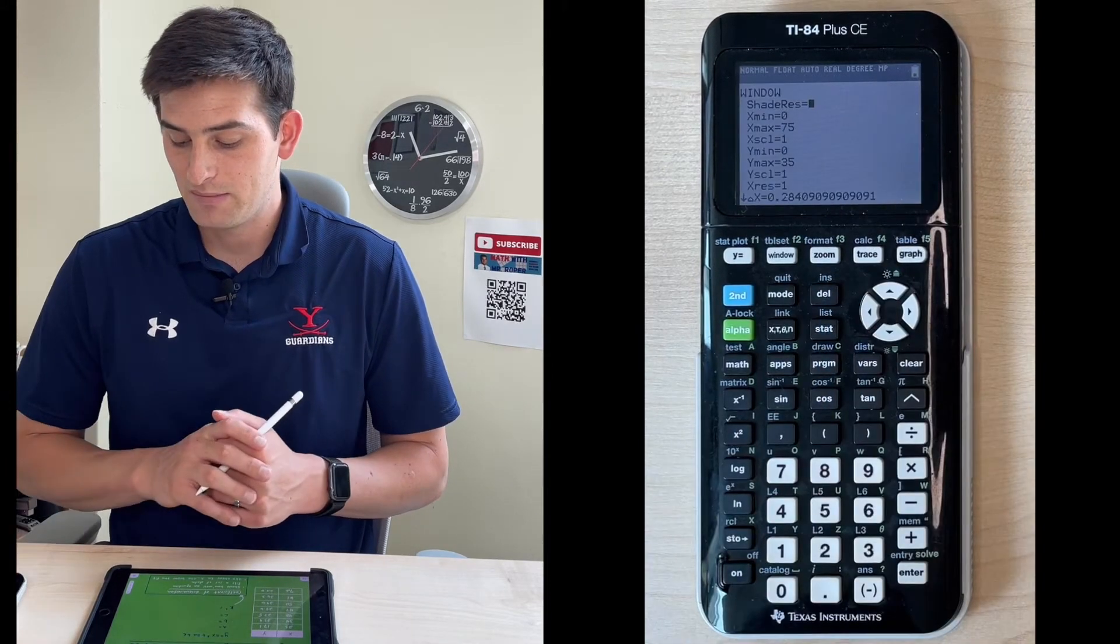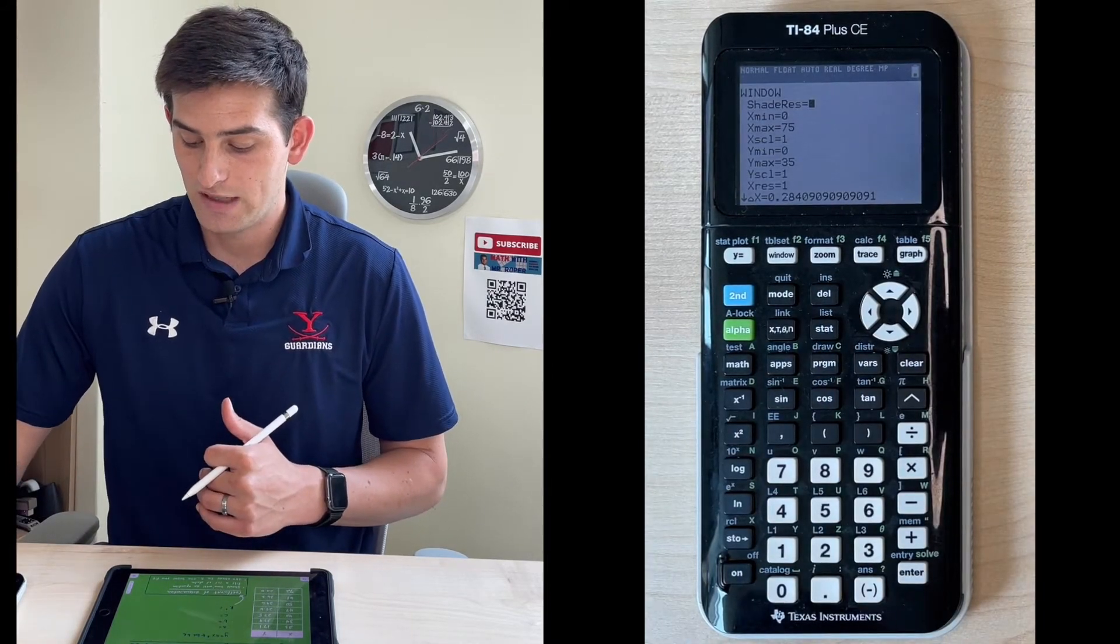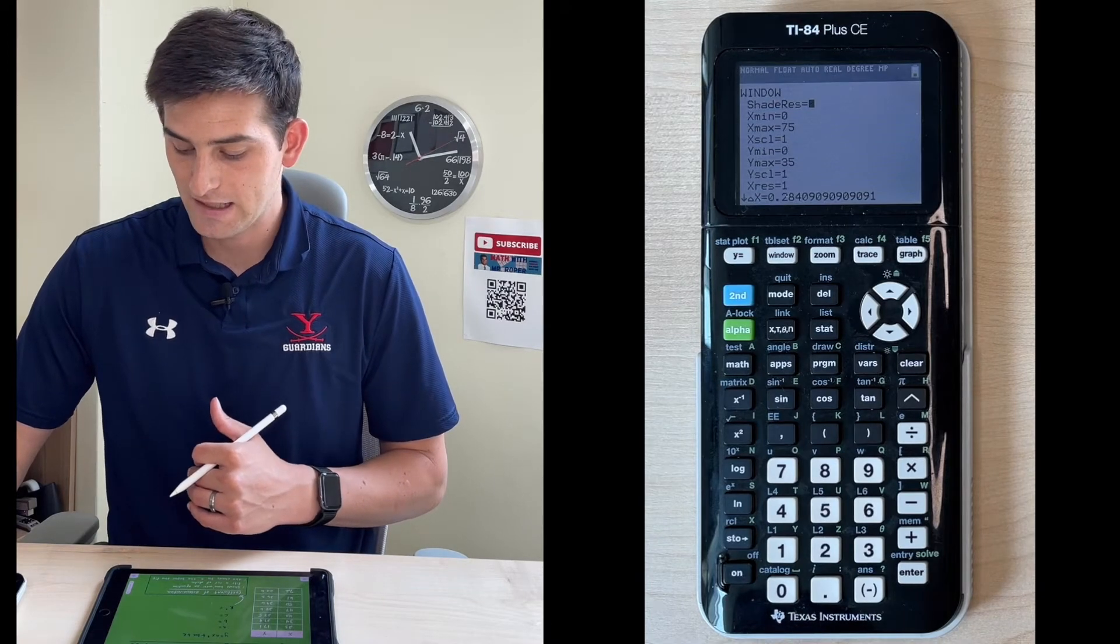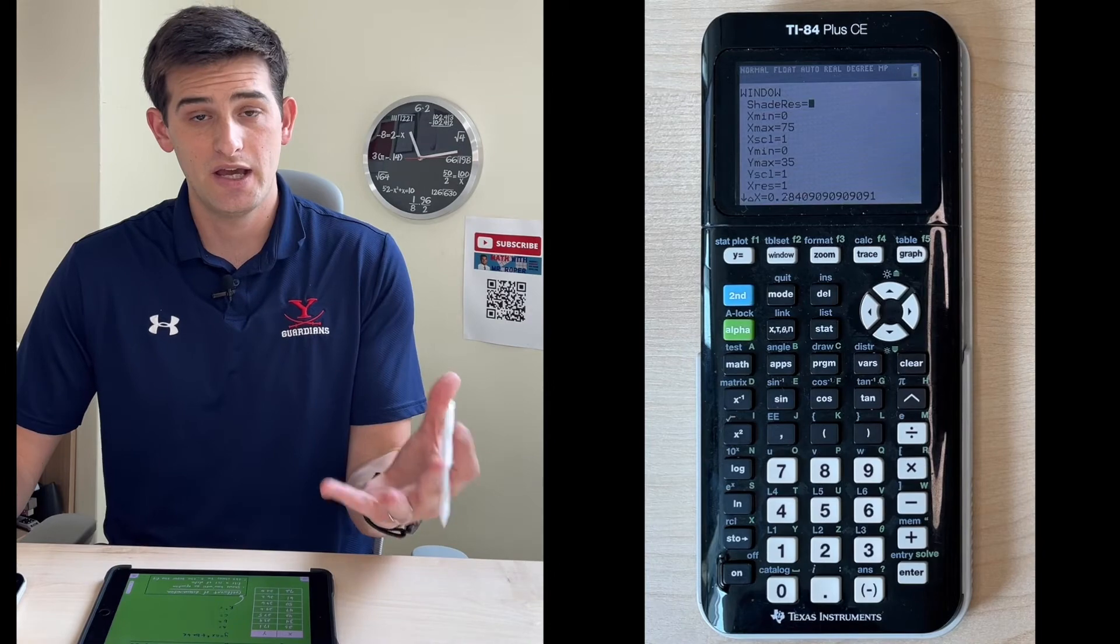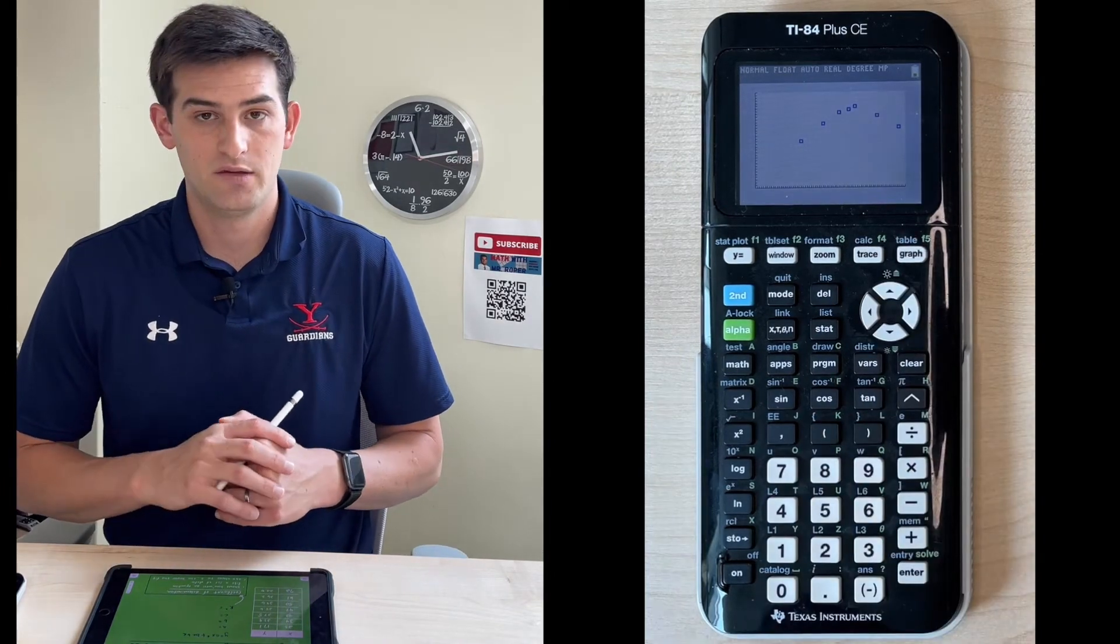If we go into our window, I've got mine set at x min and y min zero, x max 75, and y max 35. You can go ahead and change your window to that, and if you hit graph it should now look like what is on my screen.